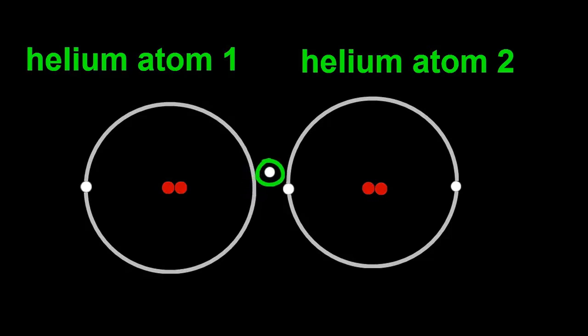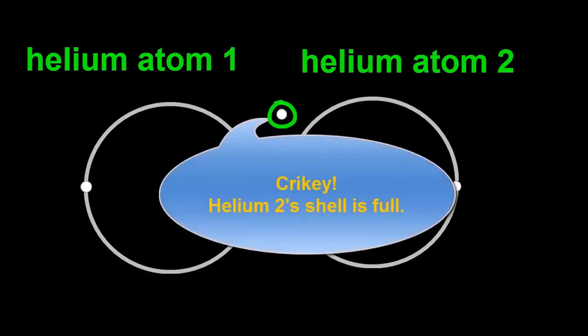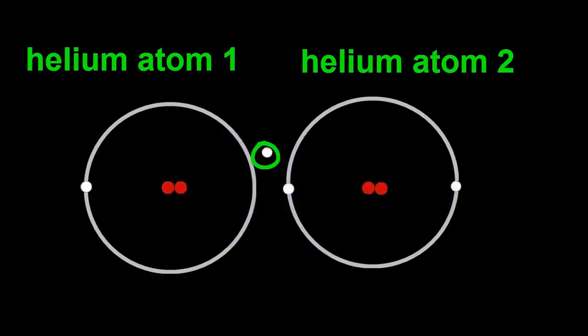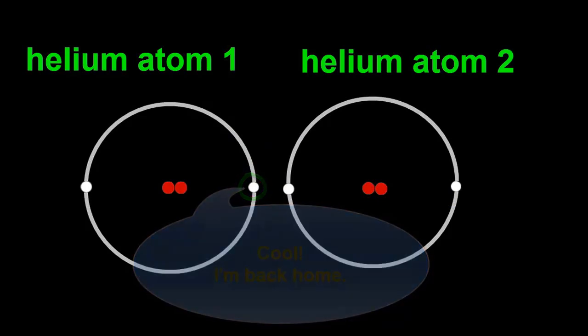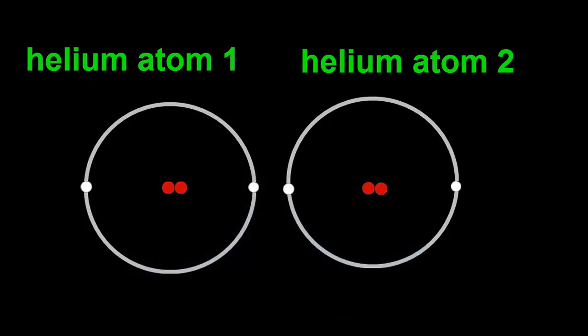The electrons from helium atom 1 can't get into the shell of helium atom 2. Why not? Because helium's electron shells are already full. That means that helium atoms can't share their electrons. Helium atom 2's electrons can't get into helium atom 1's shell either. And this has the effect that a bond cannot form between them.